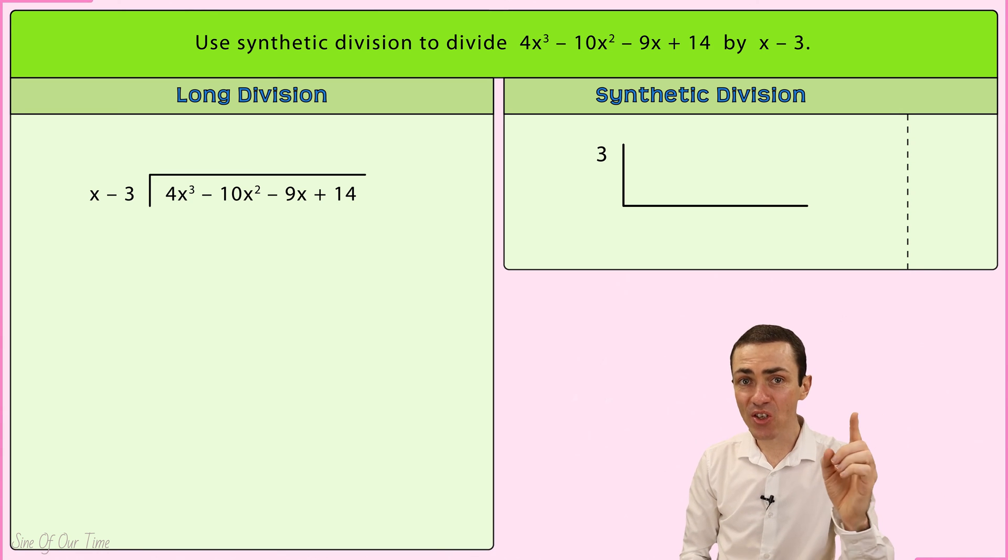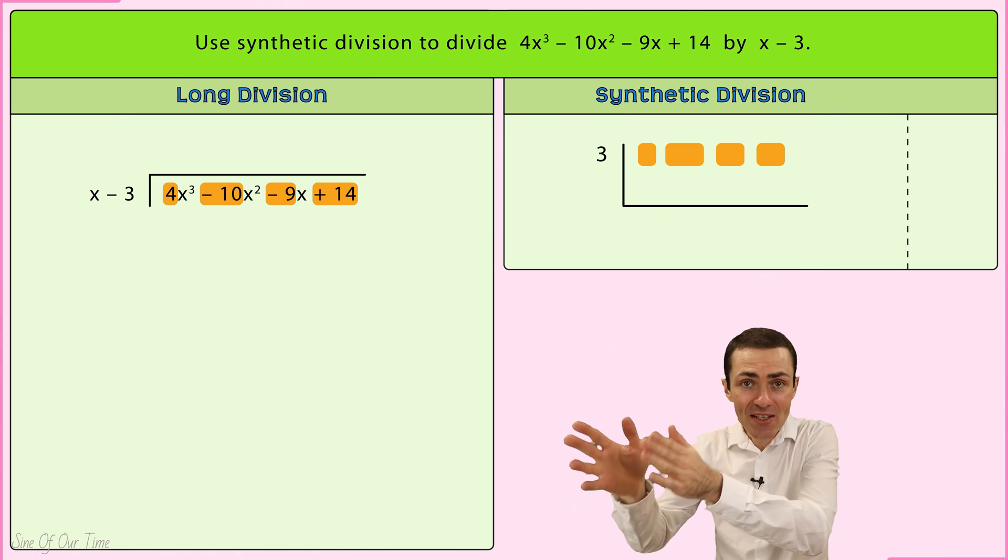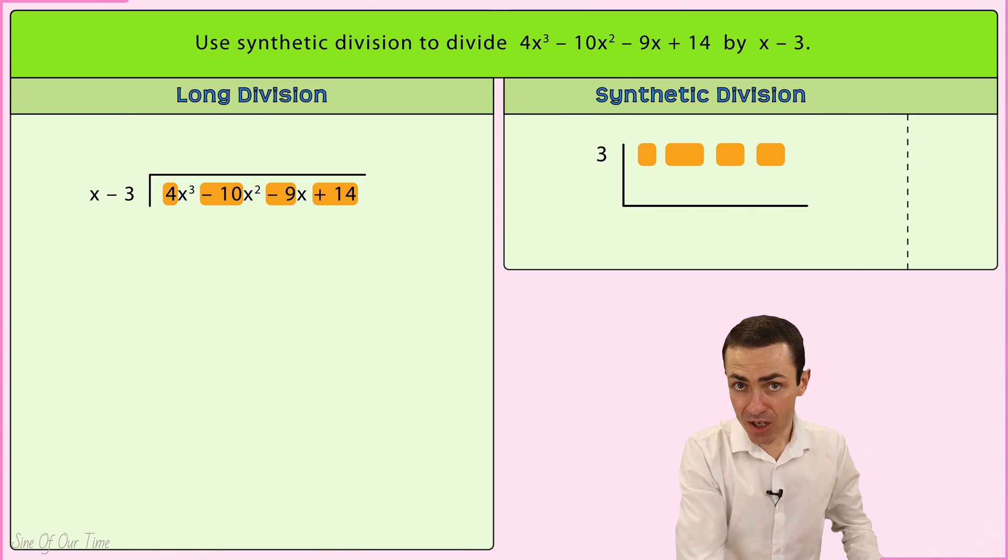We take the coefficients of each of the terms in the dividend and we write them inside the synthetic division symbol at the top, placing them each in imaginary columns.